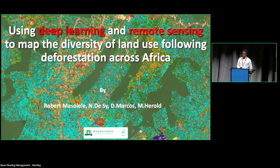Hello. Thank you for joining this presentation. I'm Robert Masolele, a postdoc researcher from Wageningen University. And today, I've changed the title to using deep learning and remote sensing to map the devastation of land use from deforestation across Africa.